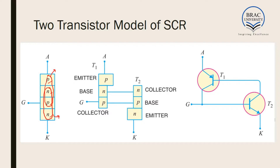The first transistor is a PNP transistor: the first P is the emitter, then N is the base, then P is the collector. The second part is an NPN BJT: the first N is the collector, then P is the base, then N is the emitter. The emitter of the NPN is connected to the cathode, the emitter of the PNP is connected to the anode, and the base of the PNP is connected to the collector of the NPN, while the collector of the PNP is connected to the base of the NPN.